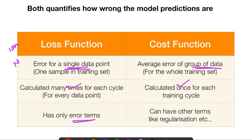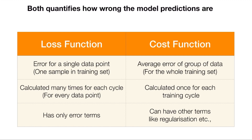Whereas in the cost function, along with the error values, there can be many other terms like regularization terms or weight penalties. So these are the main differences between loss function and cost function.